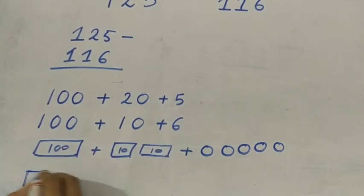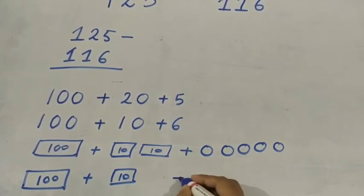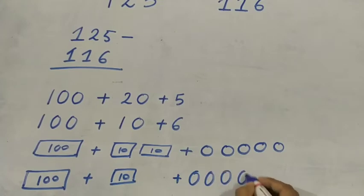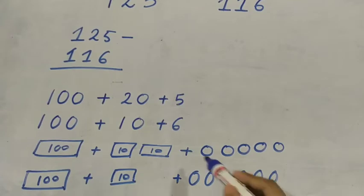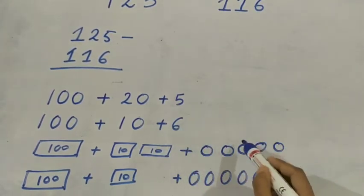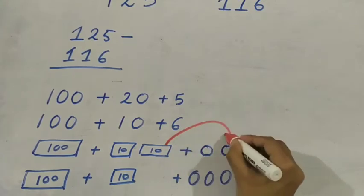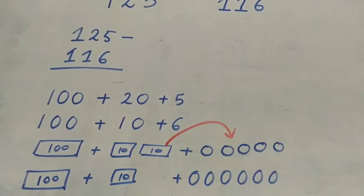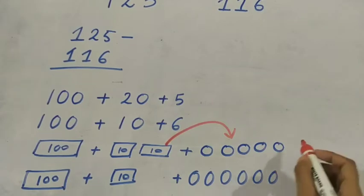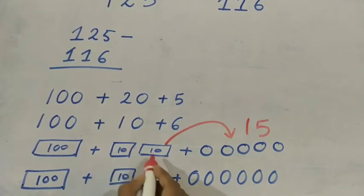Now, what about 116? A 100 rupee note, plus only 1 ten-rupee note, plus 6 one-rupee coins. I will take this 10 rupee to the ones place. So, how many rupees are there in the ones place? This 10 plus 5, so now there is 15. And here only 10.